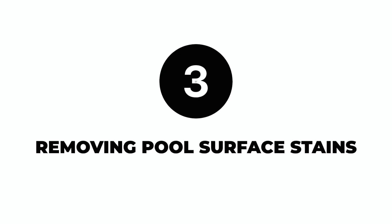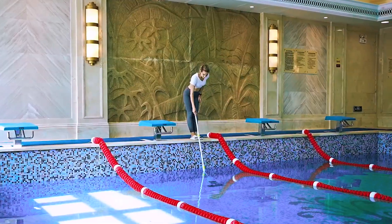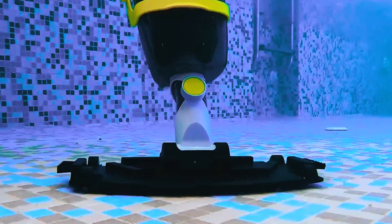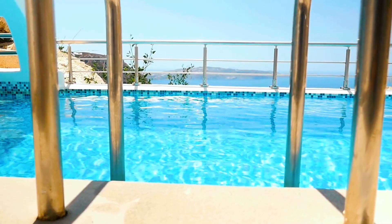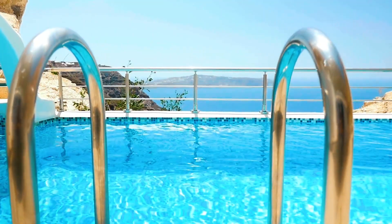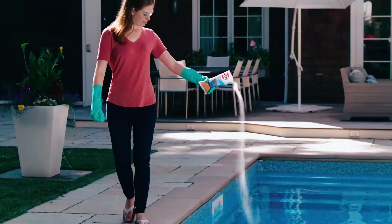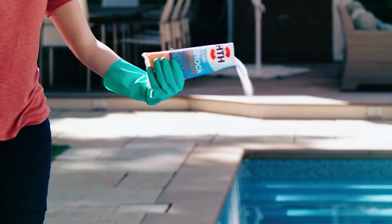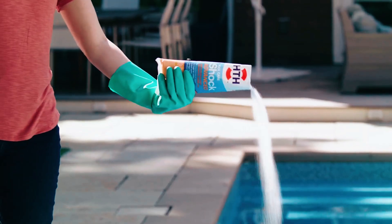Third, removing pool surface stains. Muriatic acid can remove stains from your pool surface. However, it can cause corrosion and discolor your plaster, so be sure to spot test it on smaller pool surface areas first.